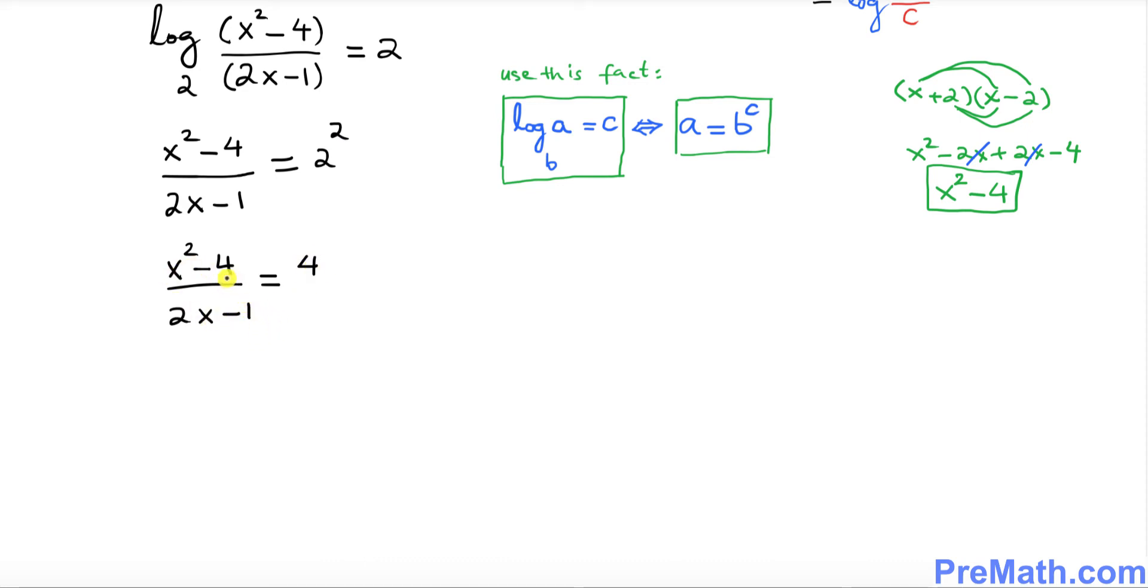Now we want to get rid of this fraction. If you want to get rid of a fraction, let me show you an easy way. This 4 could be written as 4 over 1. Now I want you to go ahead and crisscross multiply. So cross multiply. Multiply this way and multiply that way. That's a super easy way.